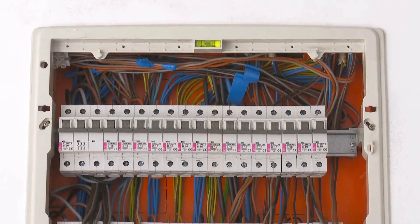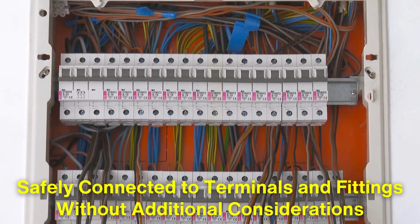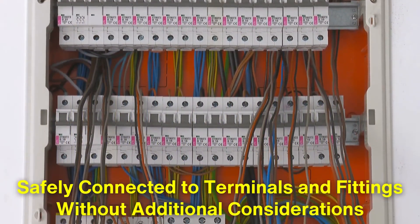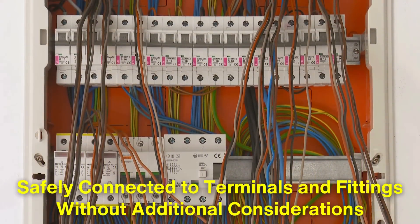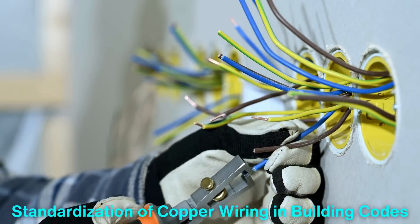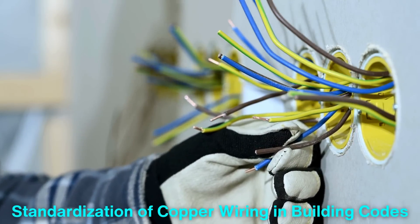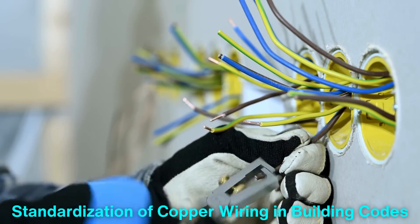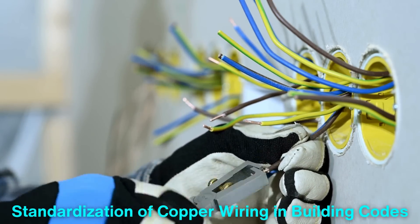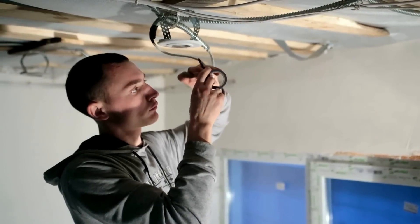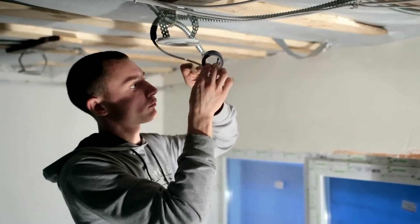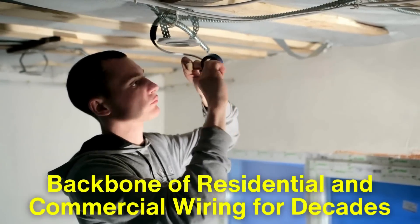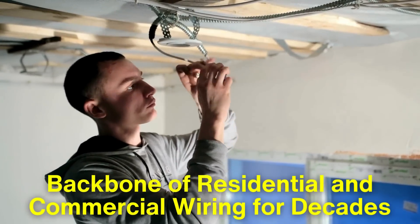Copper, on the other hand, can be safely connected to terminals and fittings without additional considerations, streamlining the wiring process and making it the preferred choice for electrical contractors. The standardization of copper wiring in building codes across the world further underscores its reliability and widespread acceptance. Builders and homeowners can trust copper wiring for consistent performance, which is a significant reason it has been the backbone of residential and commercial wiring for decades.